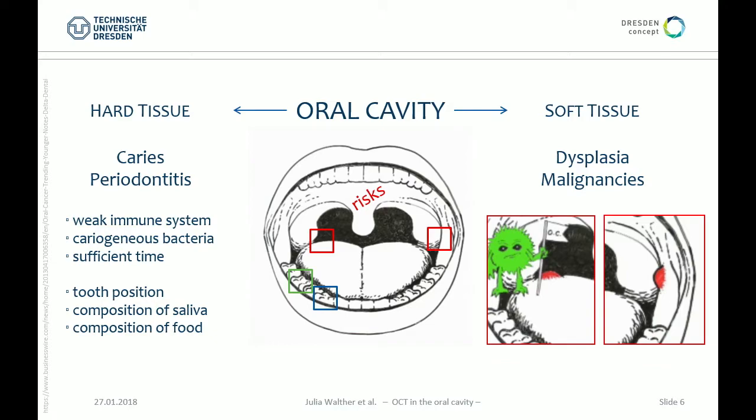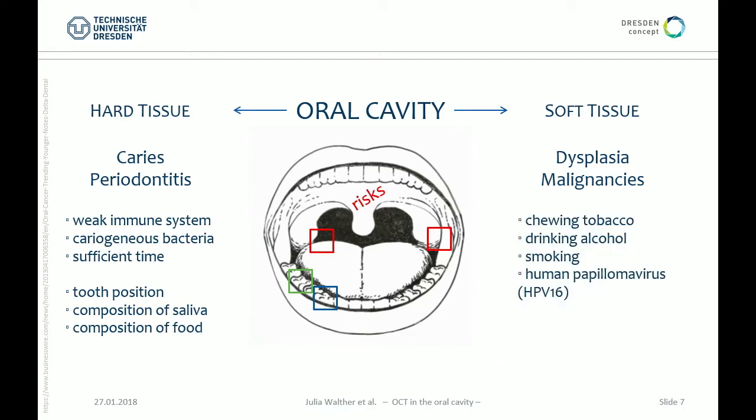Coming to the soft tissue, oral dysplasia and malignancies are becoming increasingly occurring, not only in older people but also in young people. Today oral cancer is not only a disease combined with chewing tobacco, drinking alcohol and smoking — it can also be linked to HPV, which is quite a common sexually transmitted virus.